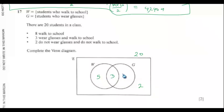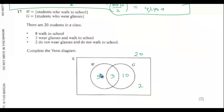Now we need the glasses-only region. The total population is 20. We already have five, three, and two — that is ten. So the remaining ten people go in the glasses-only region. That means those who wear glasses total 13, and those who wear glasses only are 10. Those who walk to school are 8, and those who walk to school only are 5.